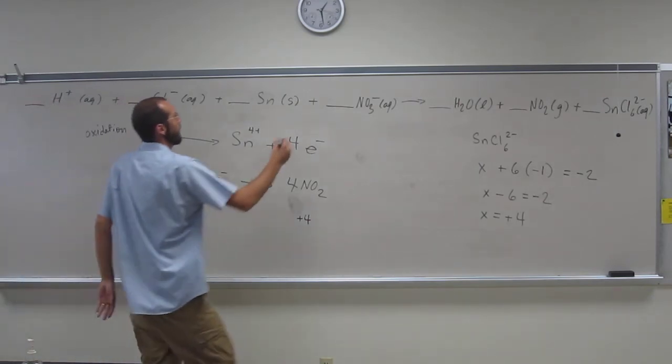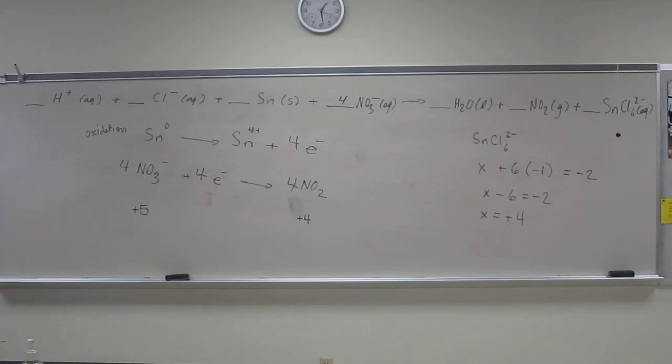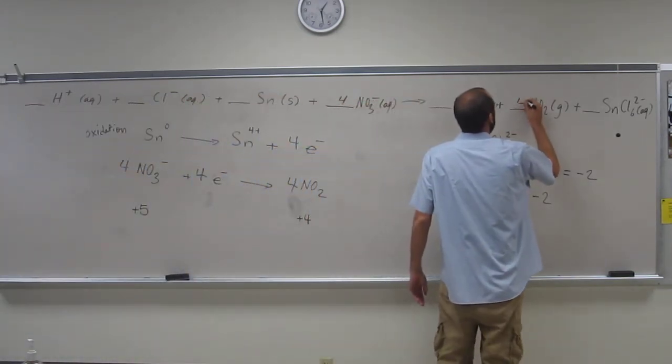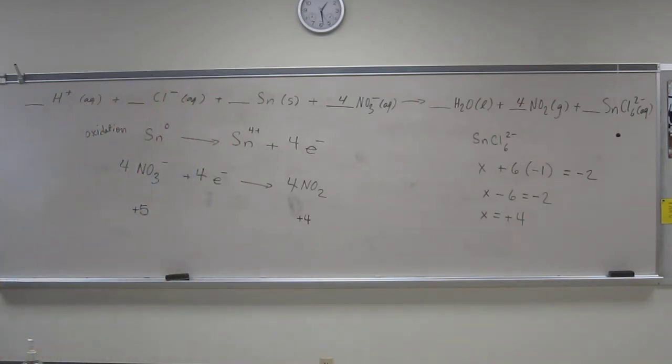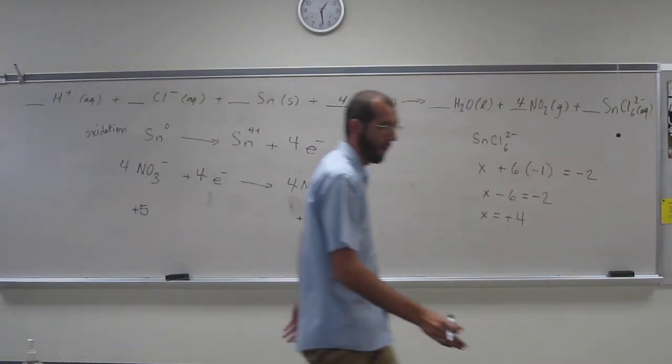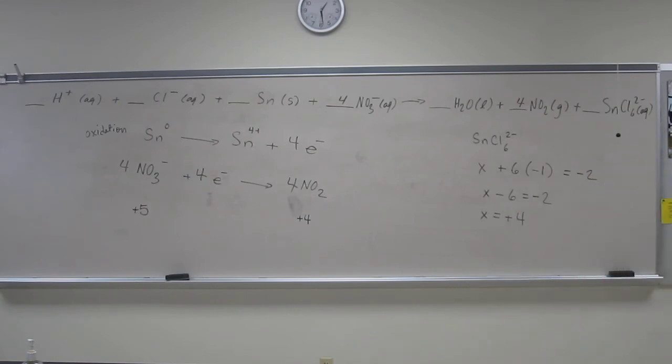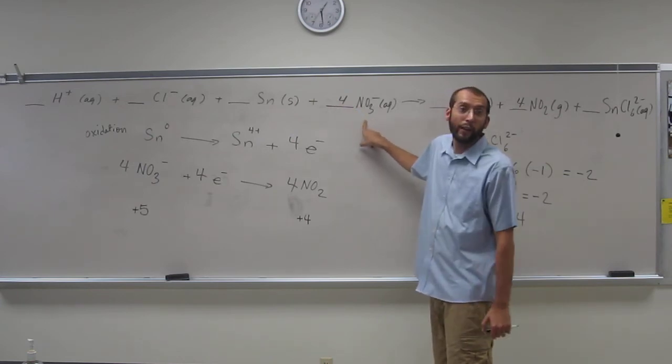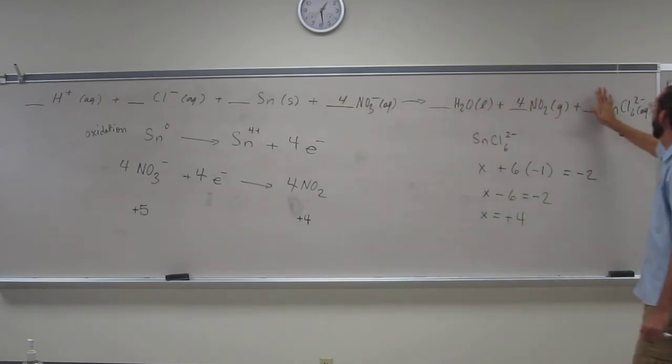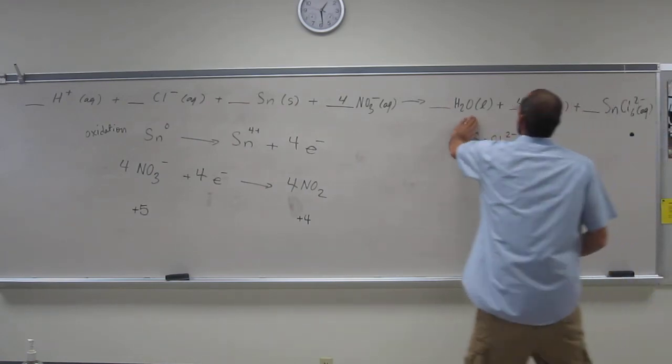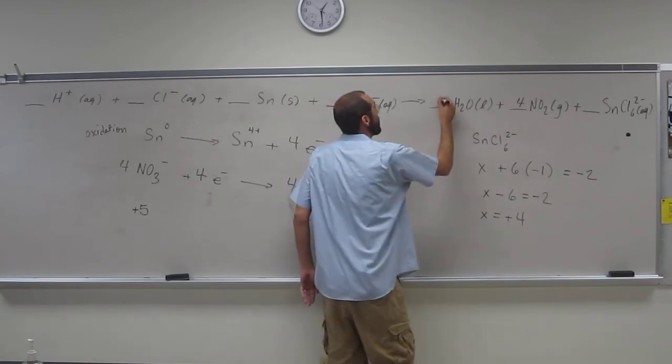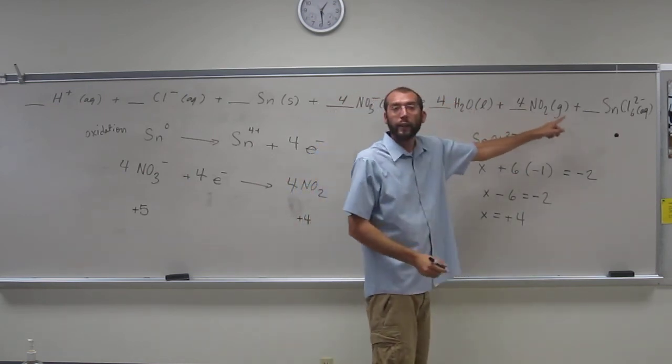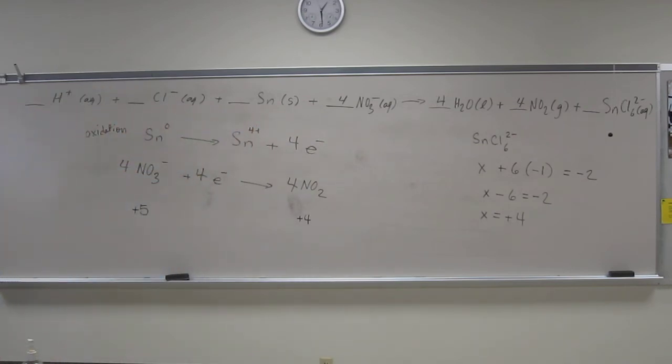Now let's just put those numbers in. So NO3 minus, four there, NO2, four there. And now balance your reaction. So we've got three times four oxygens, that's 12 oxygens here. On this side we've got two times four which is eight. So we're going to need four more from here. Four plus eight is 12, that's cool with oxygens.